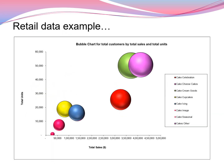This is how the bubble chart will look — total sales is in dollars, total units is in thousands. The title reads 'Bubble Chart for Total Customers by Total Sales and Units.' Remember, if you have specified noautolegend then the legend will not appear in the graph.